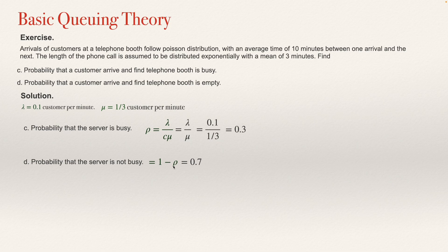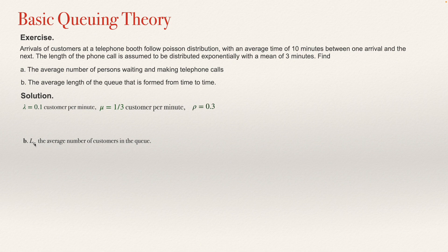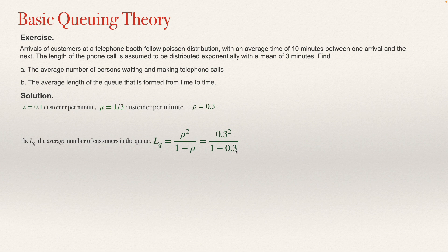For question B, we now have lambda equals 0.1, mu equals 1/3, and rho equals 0.3. The average number of customers in the queue is LQ equals rho squared divided by 1 minus rho, which is 0.3 squared divided by 1 minus 0.3. That is 0.09 divided by 0.7, which equals 0.1286.